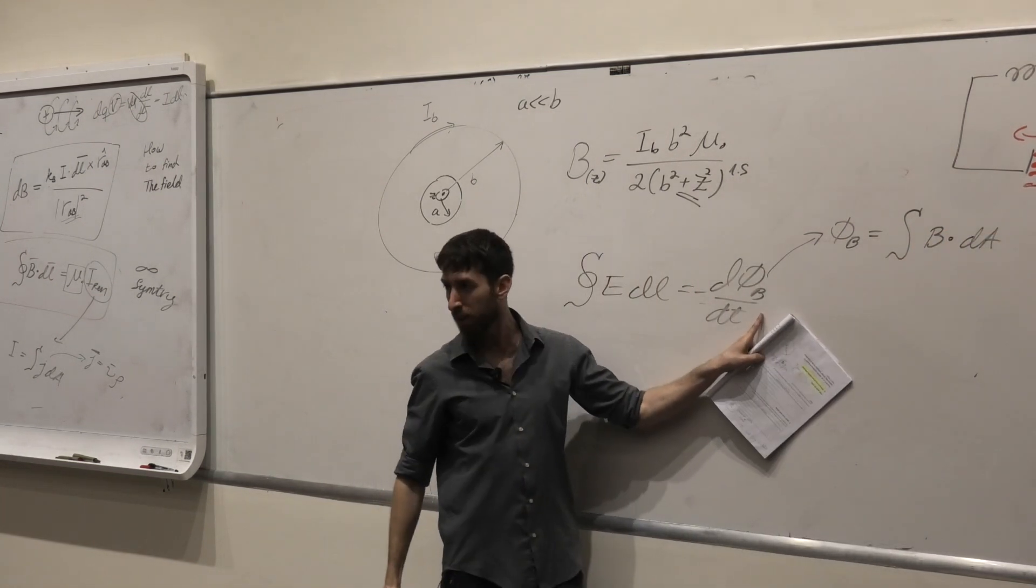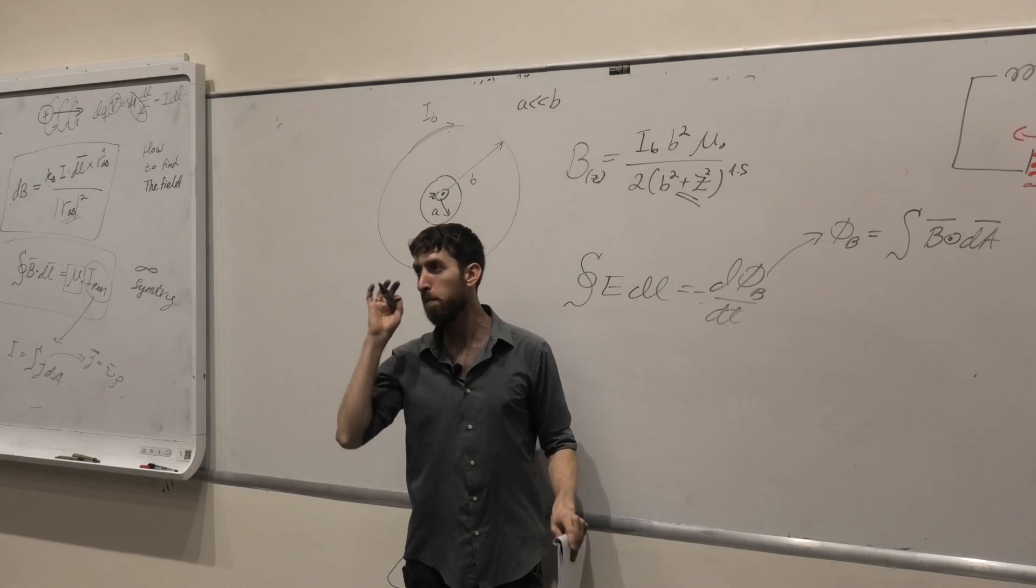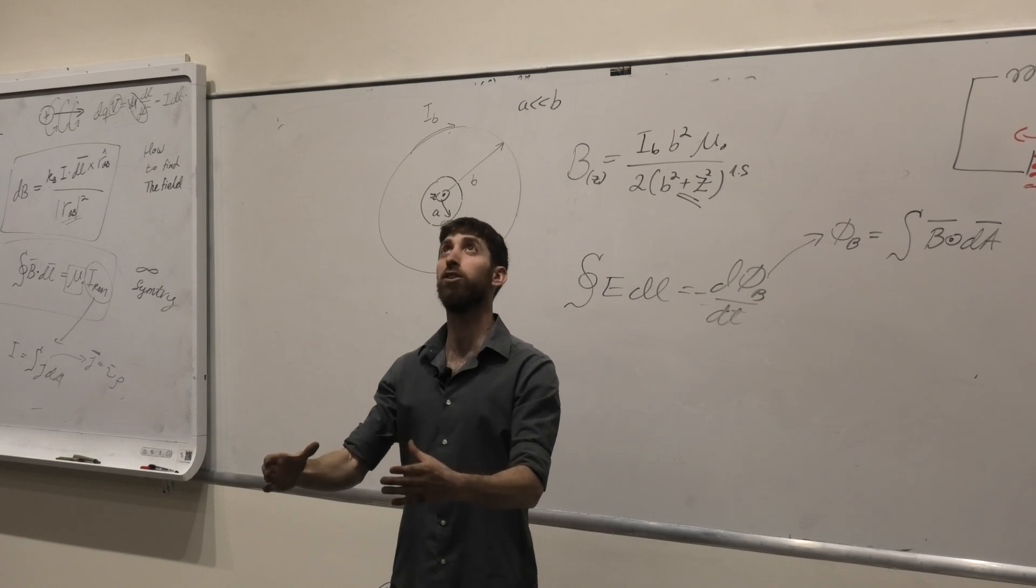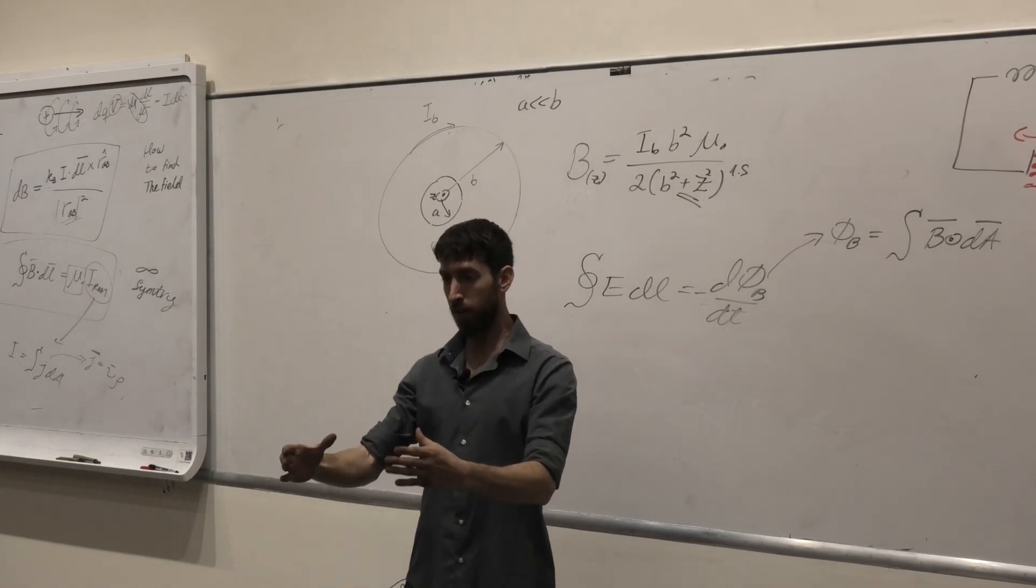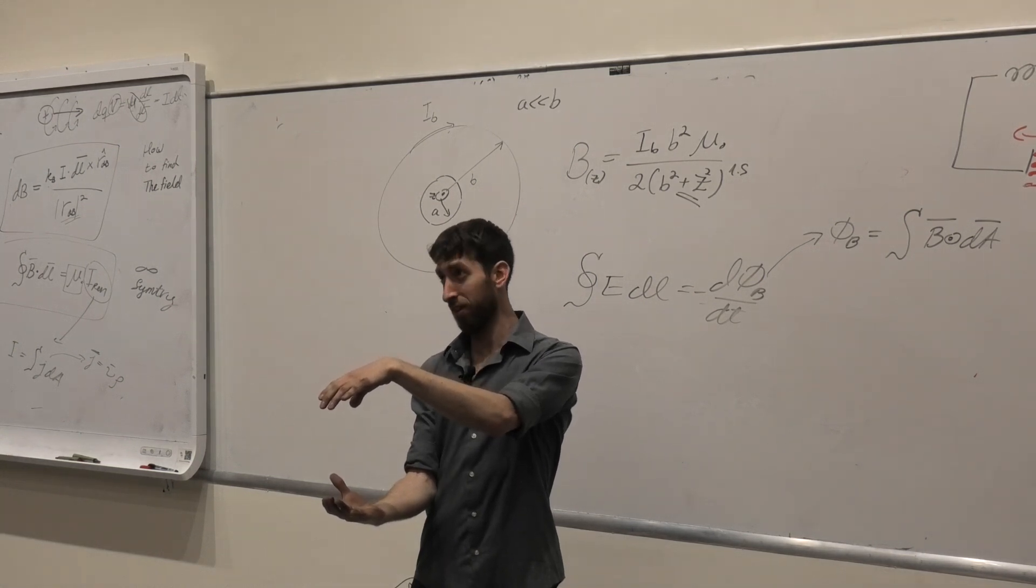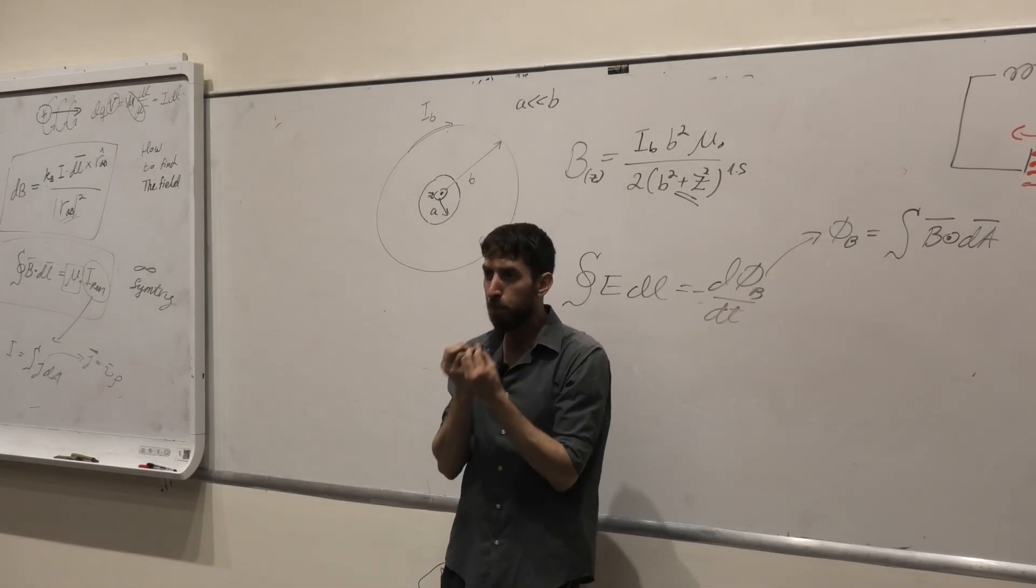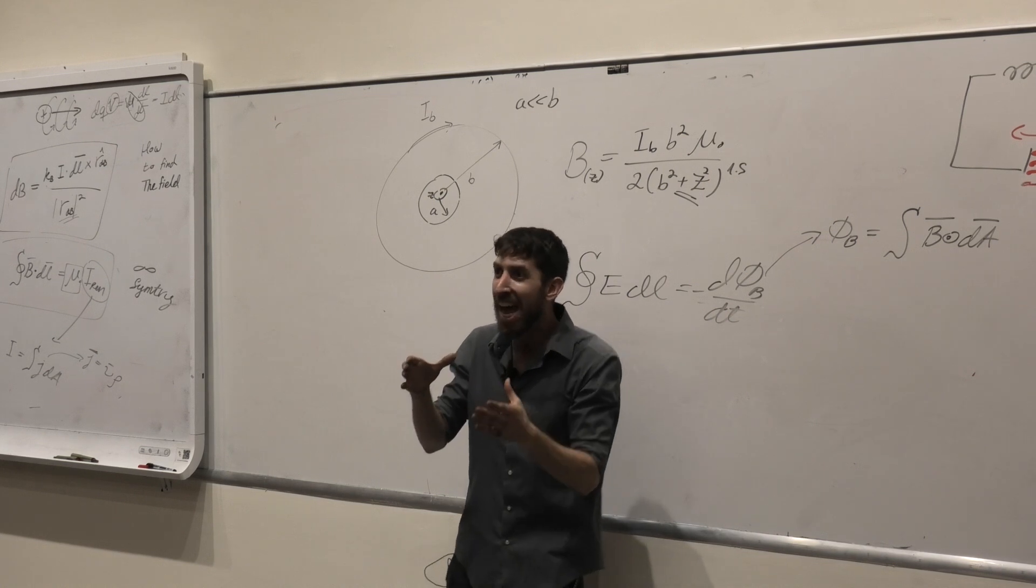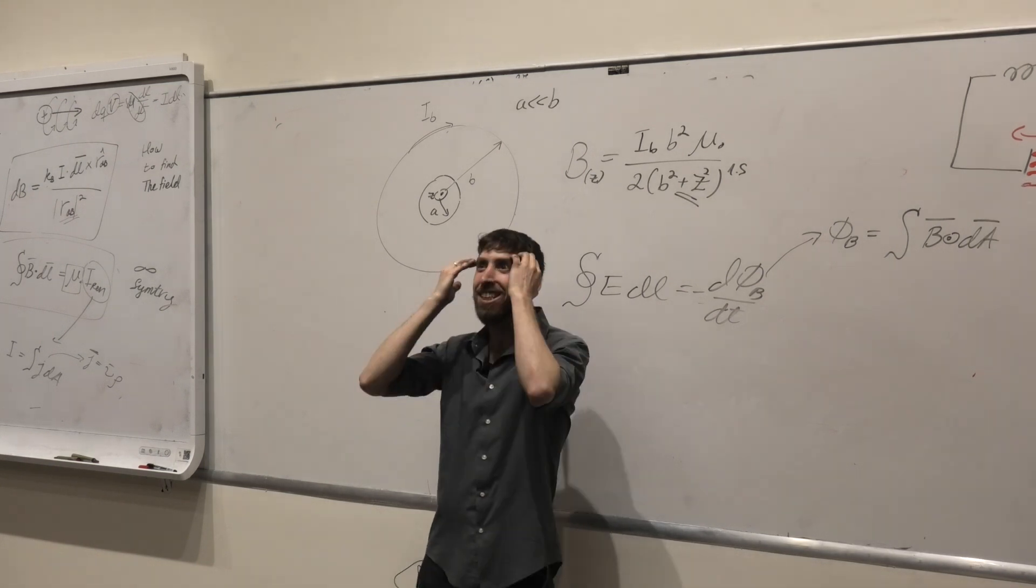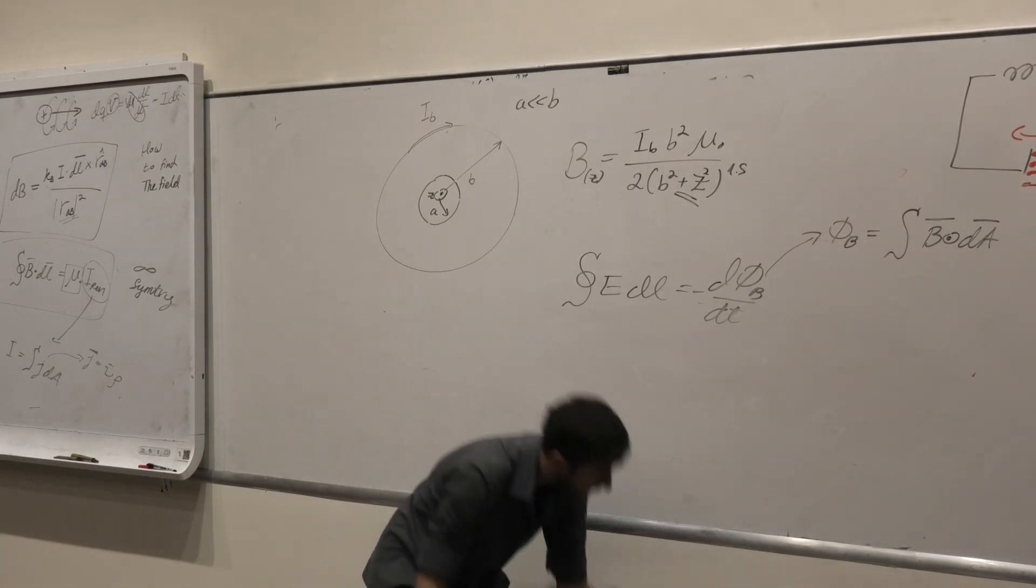So flux, phi b, is equal to the integral of the property that actually is written right here, B dot dA. And I want you to notice that we have here dot. What does the dot say? Direction matter. If I'm going to have a bucket of water and I want to take water from the clouds and I'm going to put the bucket that way, how much flux am I going to get? Nothing. So the angle is important.